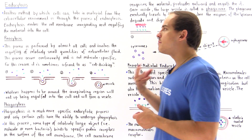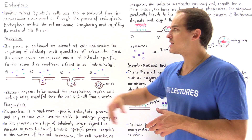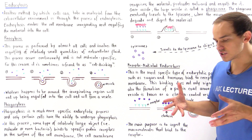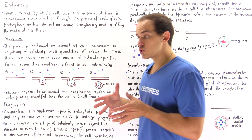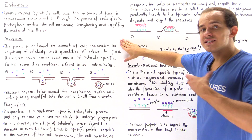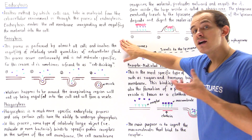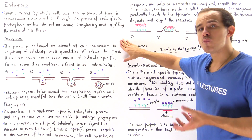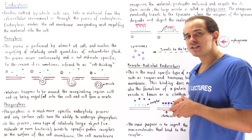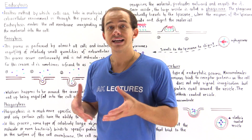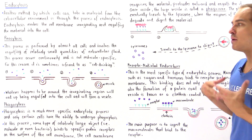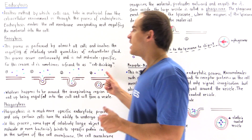The most common type of endocytotic process is pinocytosis. Pinocytosis takes place virtually in every single cell and is the process by which the cell membrane invaginates and engulfs a relatively small quantity of extracellular fluid. Pinocytosis is not a specific process — it doesn't engulf a specific type of molecule. It is basically spontaneous and takes place continuously.